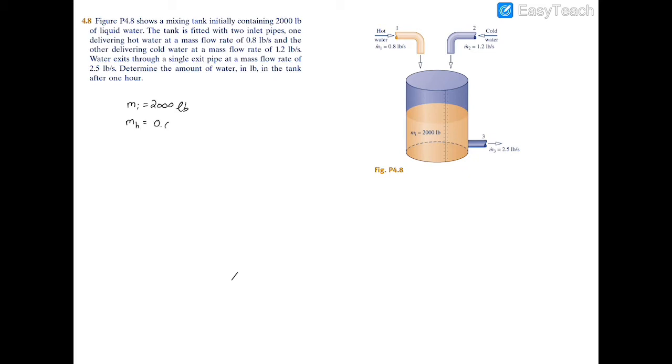is going to be 0.8 pounds per second. And because it's a rate you have to put the dot over the m. And then the cold water, we're going to call that m dot c is equal to 1.2 pounds per second.